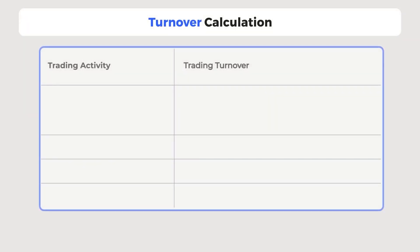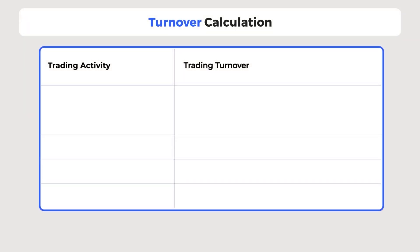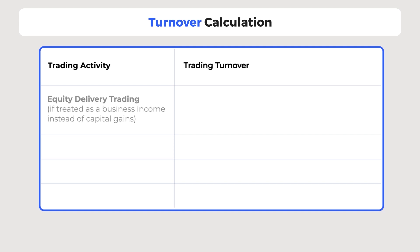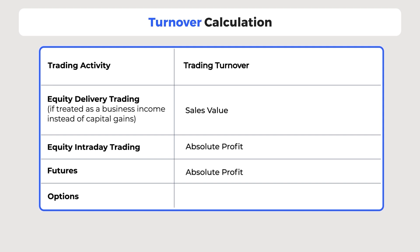Now let's see how turnover is calculated. Turnover calculation varies for delivery-based equity trading, intraday, and futures and options. Contract turnover usually shown in the trading ledger is different from trading turnover as per the Income Tax Act. The trading turnover for delivery-based equity trading is the sum of sales value. For equity intraday and futures, it is the absolute profit. Whereas for options, it is the absolute profit plus the premium on sale of options.